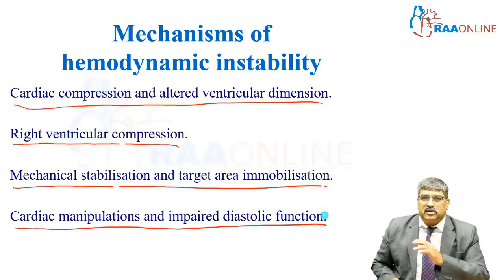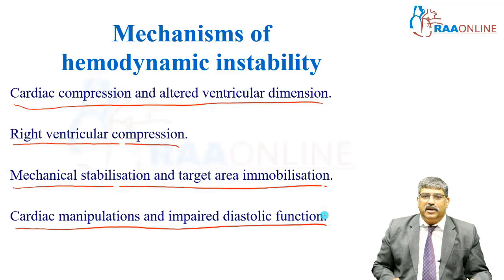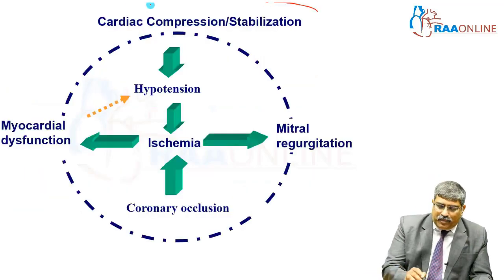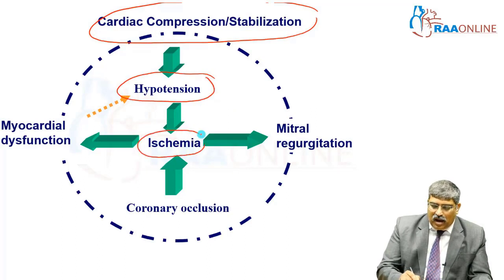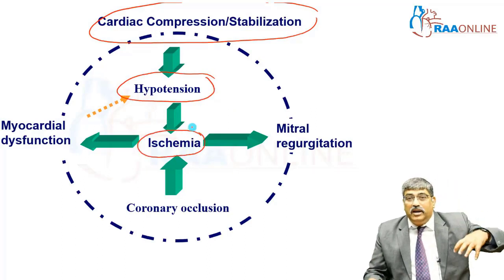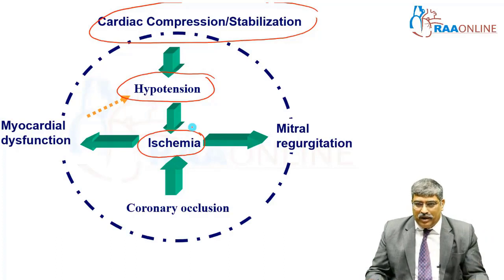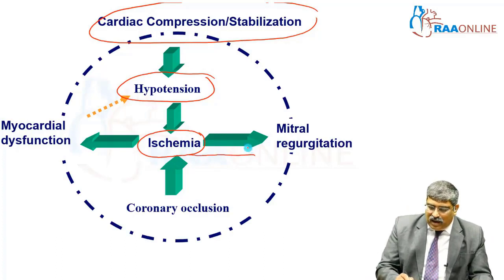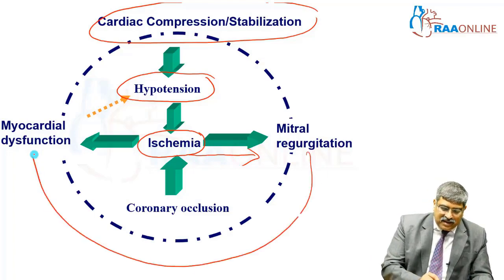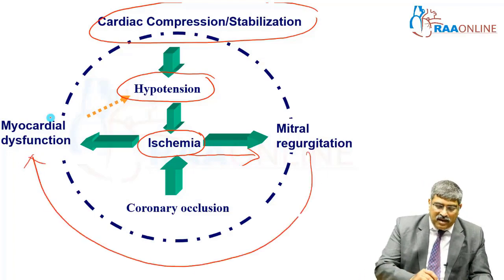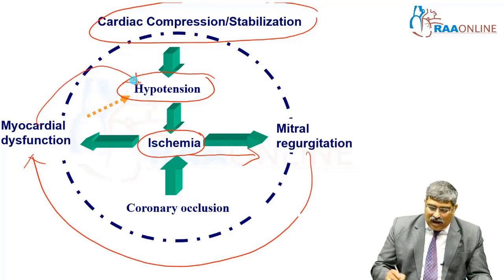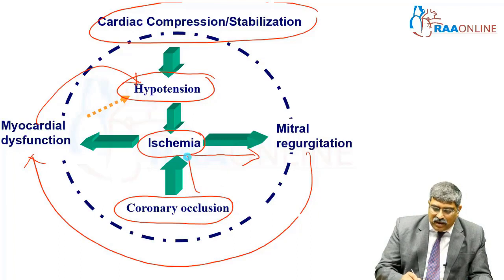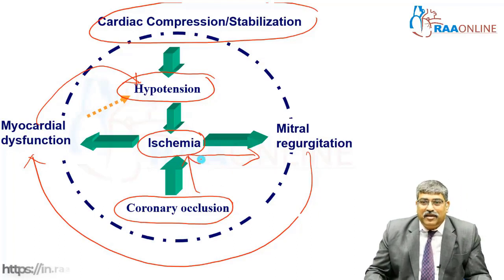Let us look at each cause of hemodynamic instability. Coming to cardiac compression, it leads to hypotension which might aggravate the already ischemic myocardium. This ischemia can lead to ischemic myocardium regurgitation, and this regurgitation can aggravate the dysfunction. This dysfunction can cause hypotension, and there is already coronary occlusion which might further aggravate your ischemia.